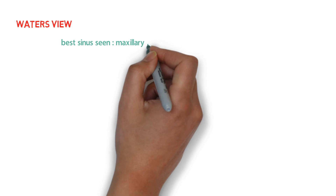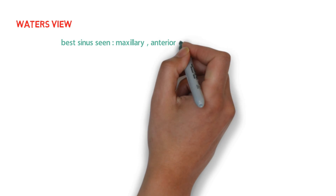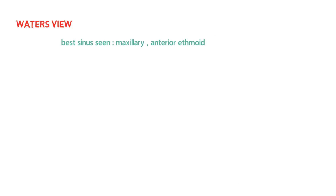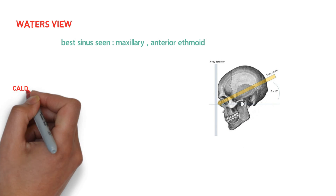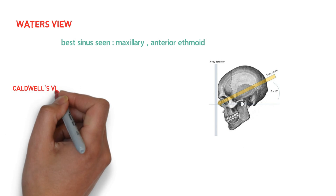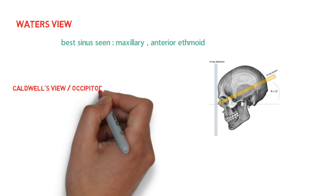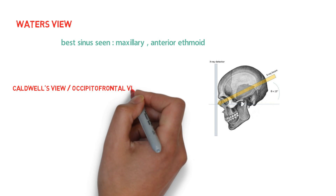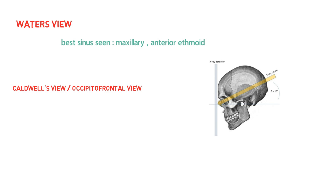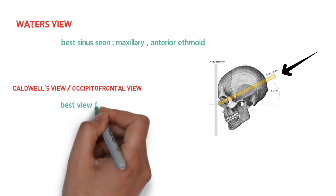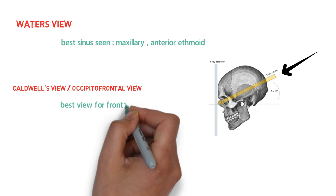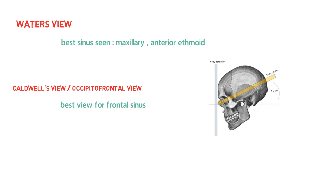Caldwell's view is also called the occipital-frontal view or nose-forehead position. The view is taken with the nose and forehead touching the film, and the X-ray beam is projected 15 to 20 degrees caudally. This is the best view for the frontal sinus. There are many other views for studying paranasal sinuses, but these two are the most important from an examination point of view.